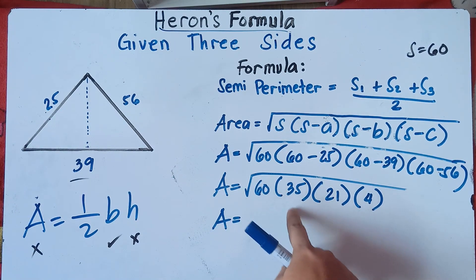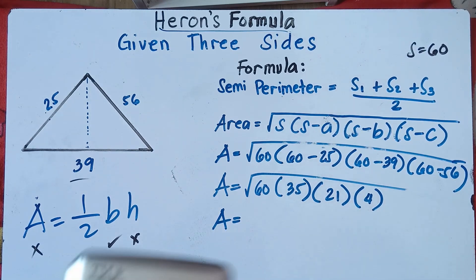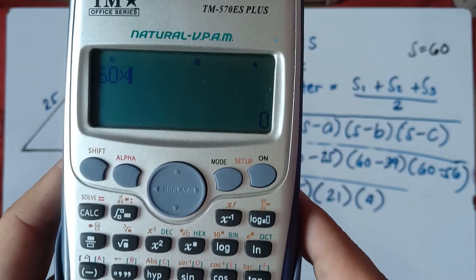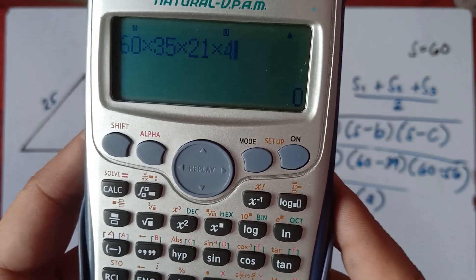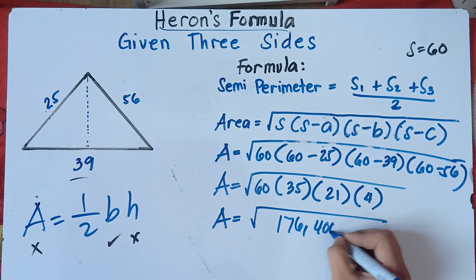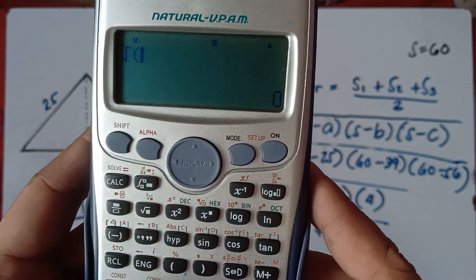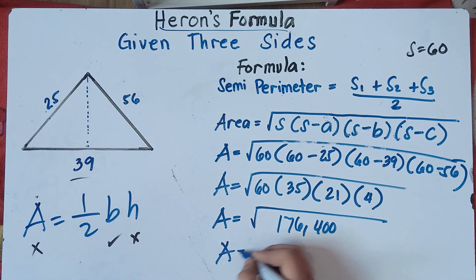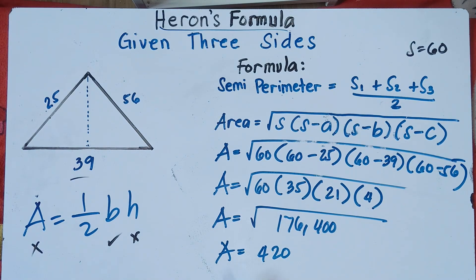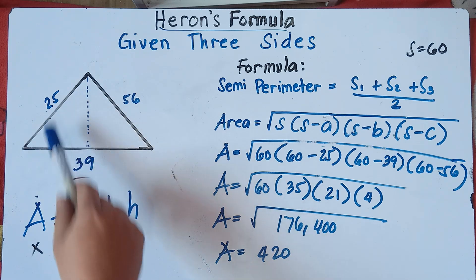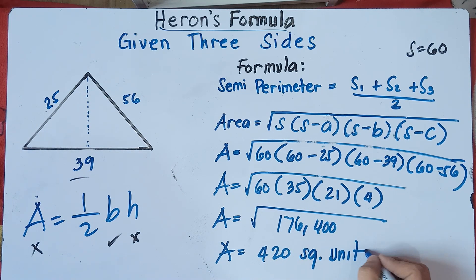If the teacher will allow you to use a calculator, just simply multiply 60 times 35 times 21 times 4. That gives us 176,400. So the square root of 176,400 equals 420. Do not forget that since we are finding the area and units are not given, we use square units. So the area equals 420 square units.